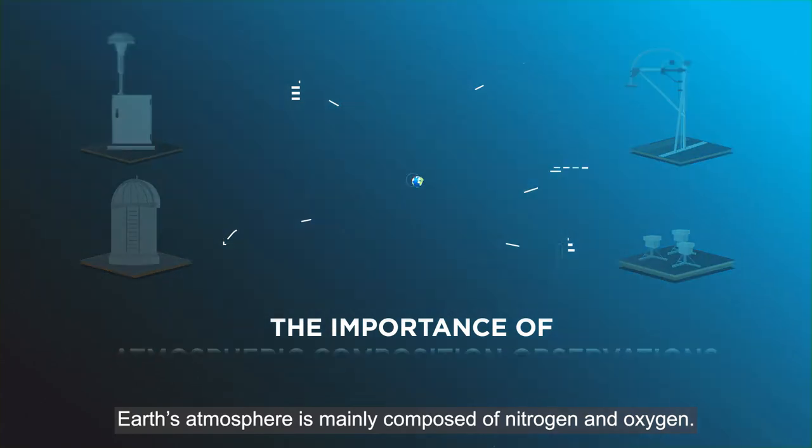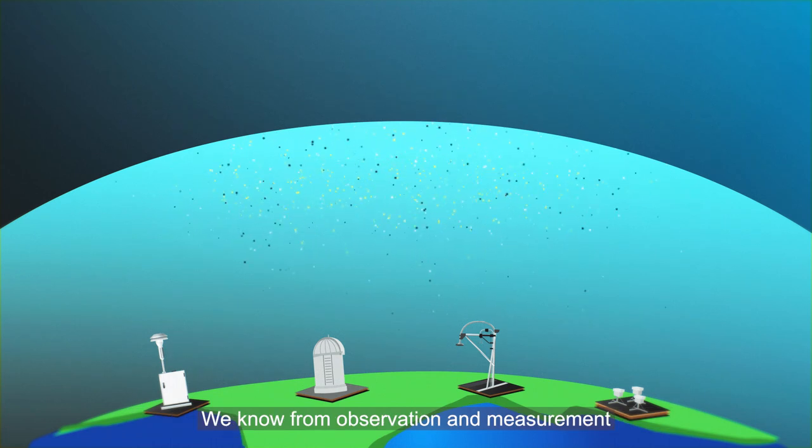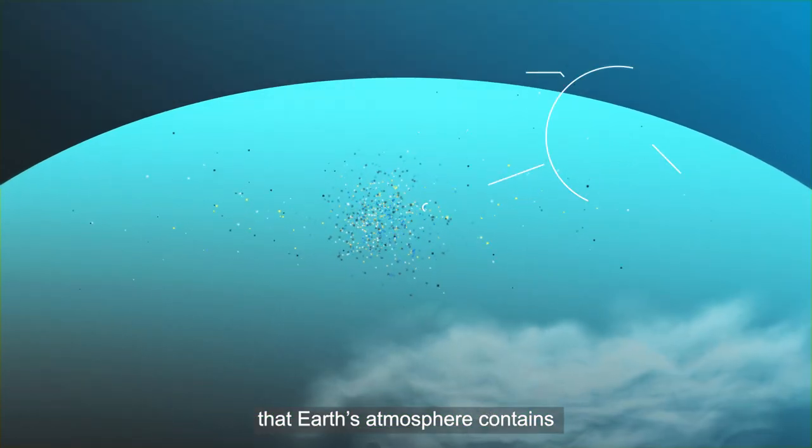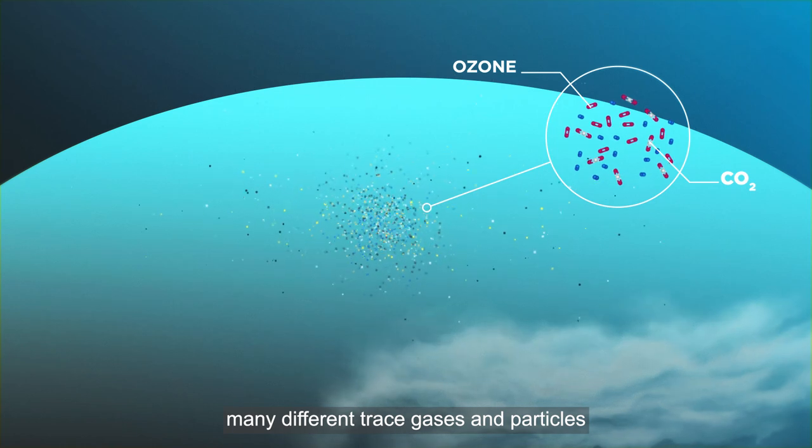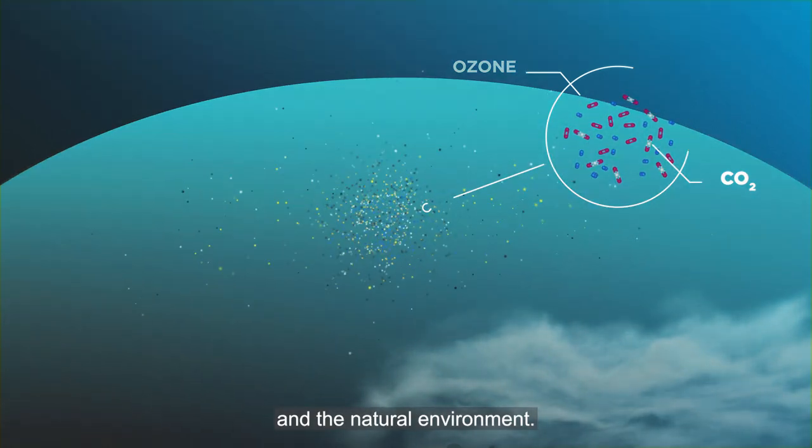Earth's atmosphere is mainly composed of nitrogen and oxygen. We know from observation and measurement that Earth's atmosphere contains many different trace gases and particles that have substantial impacts on life and the natural environment.